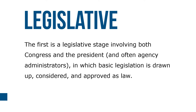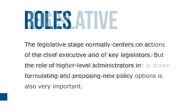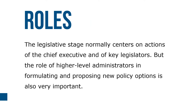Where administrative agencies play a central role in the policy process, policymaking can be described as occurring in four stages. The first is a legislative stage involving both Congress and the president, often agency administrators, in which basic legislation is drawn up, considered, and approved as law.